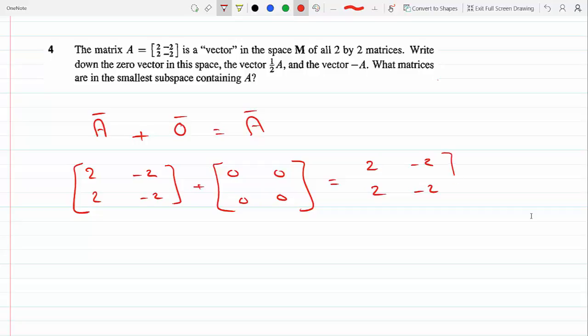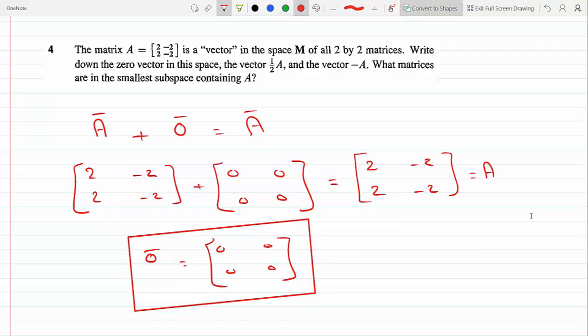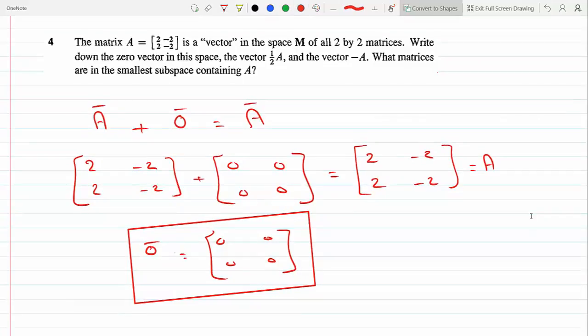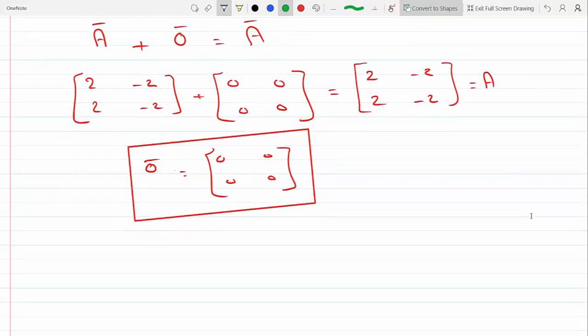Which is A. So that means the zero vector is the zero matrix [0, 0; 0, 0]. And then it says write down the vector half A. So half A...